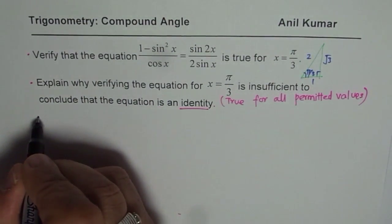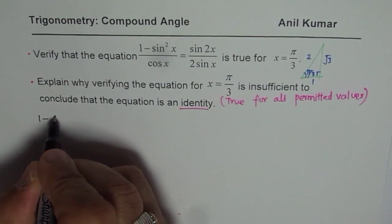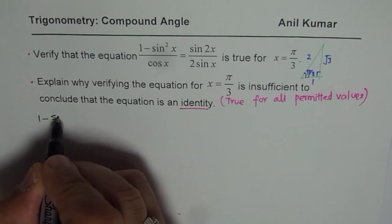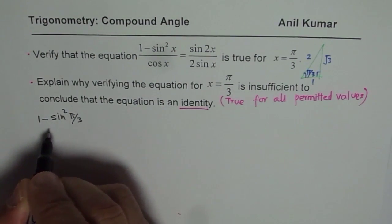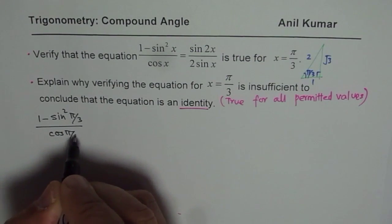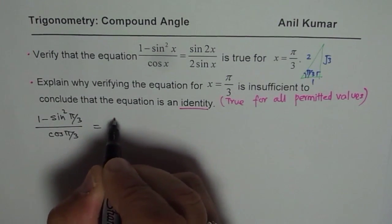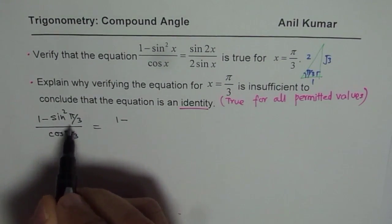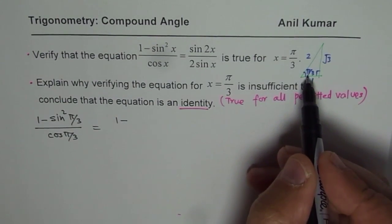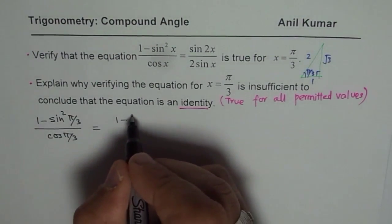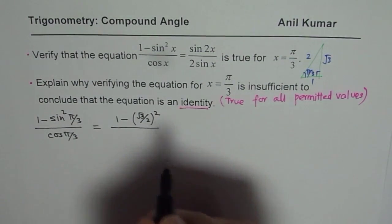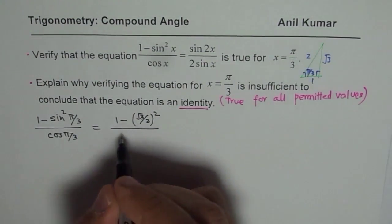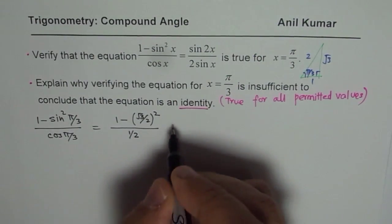So the left side for us is (1 - sin²(π/3))/cos(π/3). This is 1 - (sin π/3)². Sin π/3 is opposite over hypotenuse, so I could write this as (√3/2)². And the denominator is cos π/3, which is 1/2.